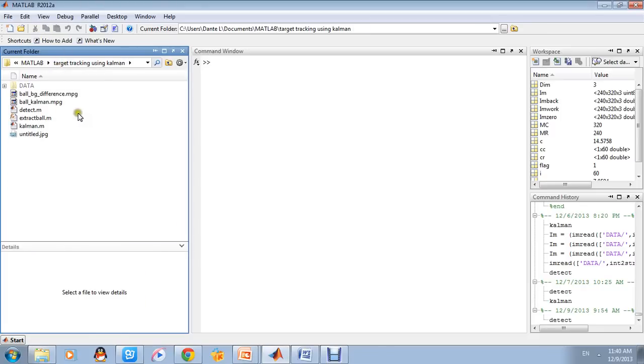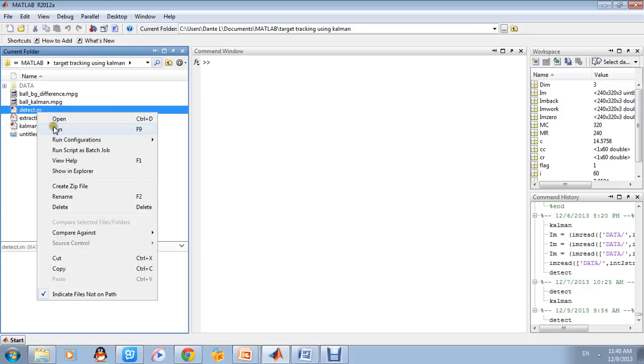There are two main files in this program. The detect.m and the Kalman.m. The detect.m is based on the algorithm without Kalman filtering involved. Let's run this.